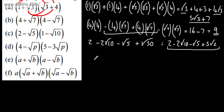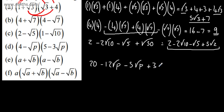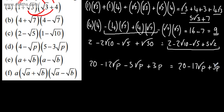Next: (5 - root P)(4 + 3 root P). Expanding: 5 times 4 is 20; minus 12 root P; minus 5 root P; and negative times negative gives plus 3, with root P times root P being P, so plus 3P. Collecting like terms: 20 minus 12 root P minus 5 root P is minus 17 root P, plus 3P. Root P and P are not like terms, so that is in its simplest form: 20 minus 17 root P plus 3P.